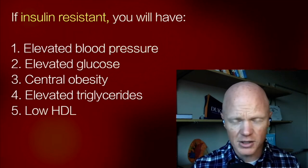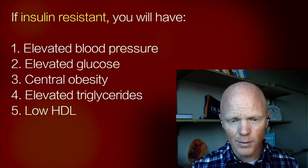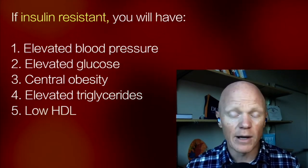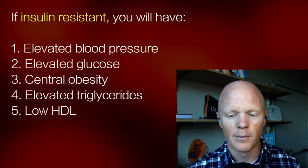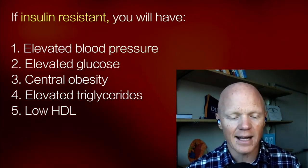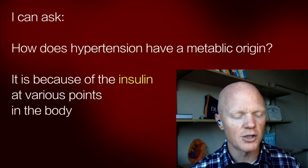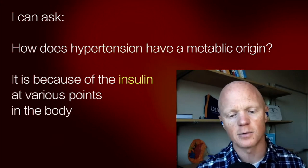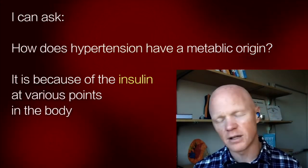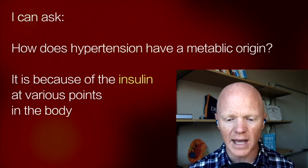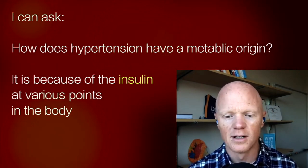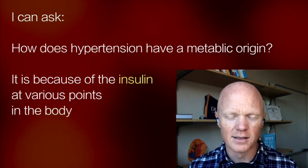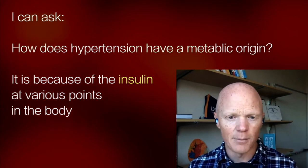A physician gets paid to see patients — that's the job of the physician. I'm a scientist; I get paid to ask questions. It's not as lucrative to be curious as seeing patients. But that does mean I can sit back and ask: how does hypertension have a metabolic origin? Why is it part of the metabolic syndrome? It's because of insulin acting throughout the body — on blood vessels, on the adrenal glands — affecting blood volume and blood pressure.